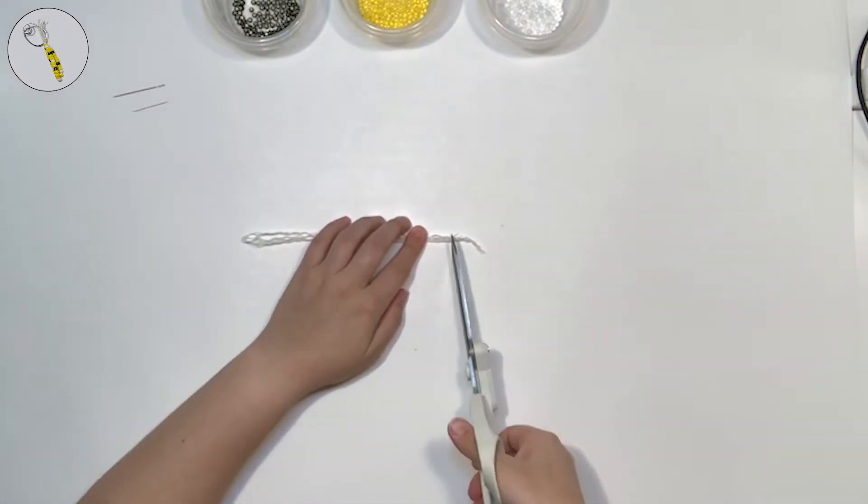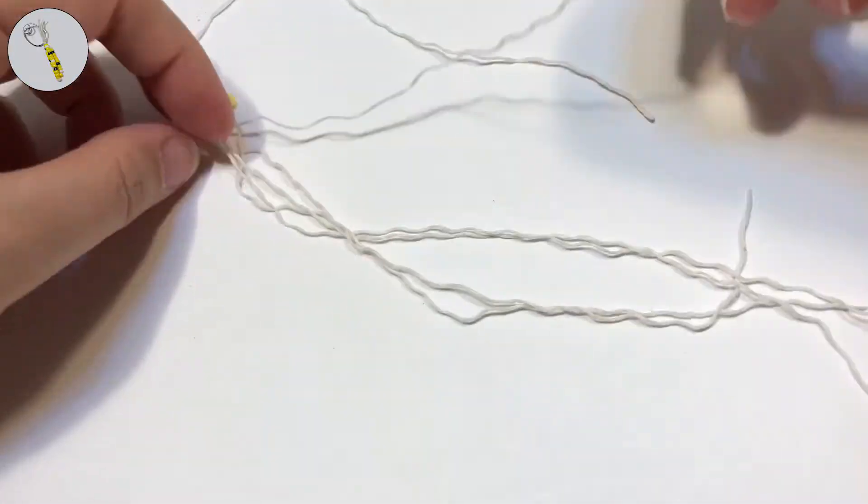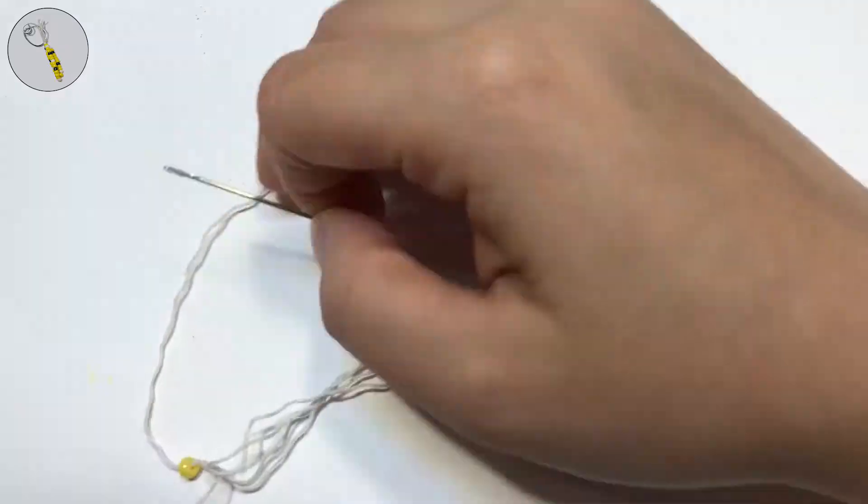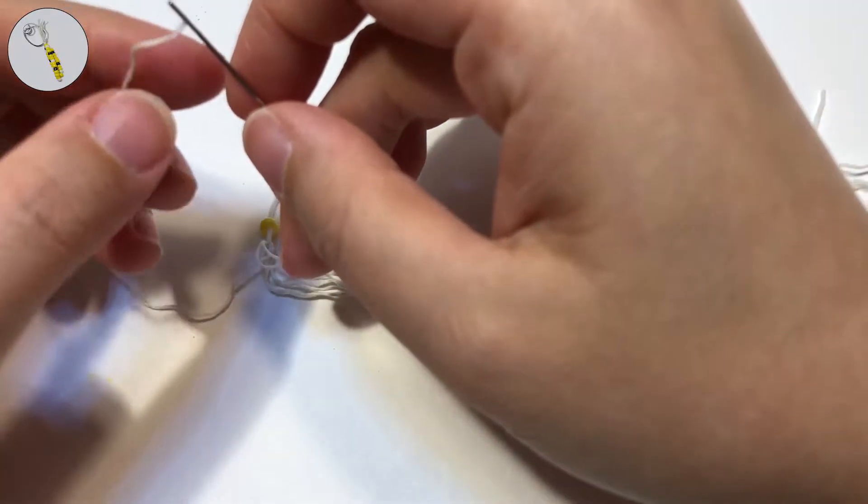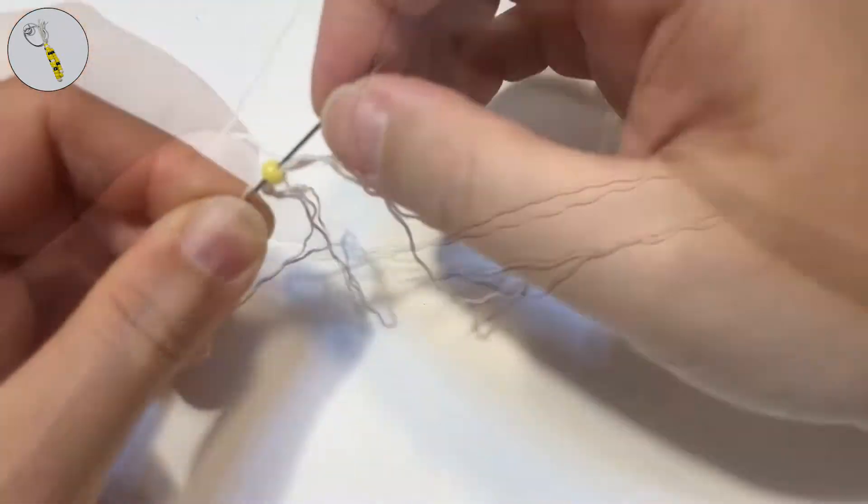Step three: add beads. Take a glass bead and thread it with your first string. To get the other five strings through you'll need to use a needle. As you add strings to the bead, it will get harder and harder to pull through.